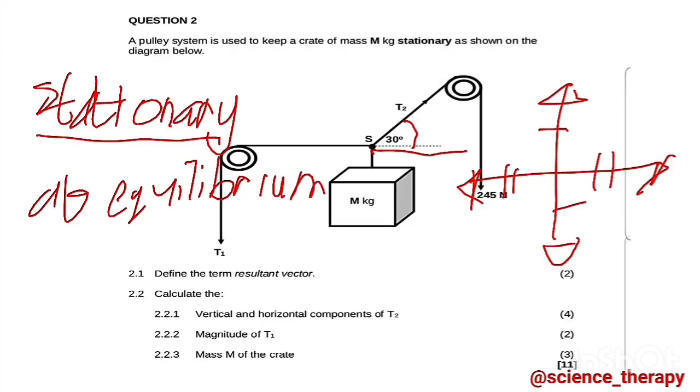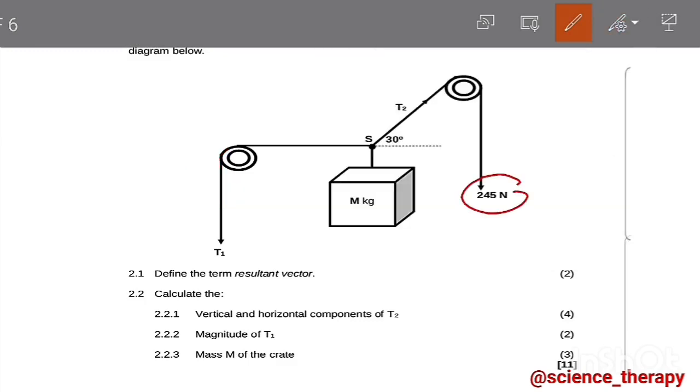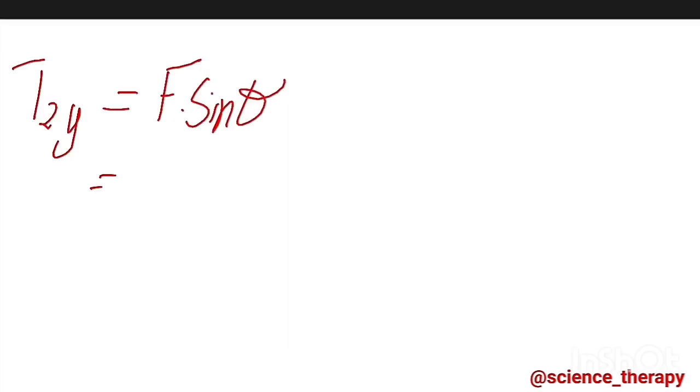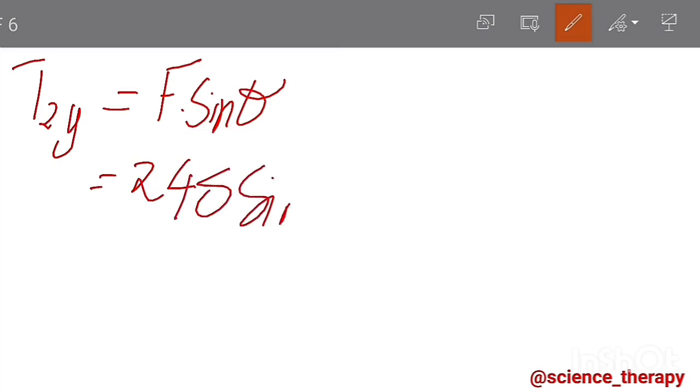For your vertical component we say T2y. For your vertical component we have the formula F sine theta. Your force here, we've been given T2, we've been given 245. So as you can see here, T2 is being pulled by this rope downward, but the force is really exerted here at an angle. The same thing with T1: T1 is being pulled downward here but the force is really exerted to the left. So now we have the force is 245 activated at an angle. We have 245 sine 30 degrees. If you punch that in your calculator it gives you 122.5 newtons.